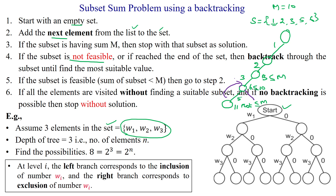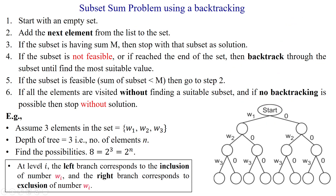From 3 we can select 6. So 1 + 2 + 6 = 9, which is less than or equal to 10, but there is no next element, so we reach a dead end. We apply backtracking again. From 2, we ignore 3 and select 5 instead — so 2 + 5 = 7. We keep doing this until reaching the target. If no solution is found after visiting all elements and there is no possibility of further backtracking, we stop the algorithm.